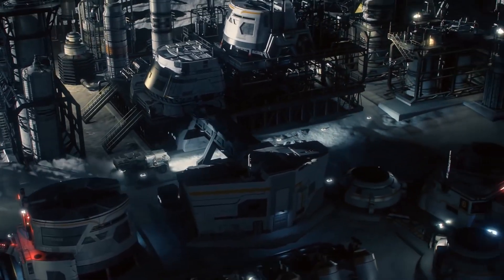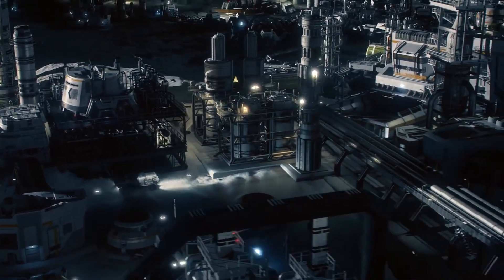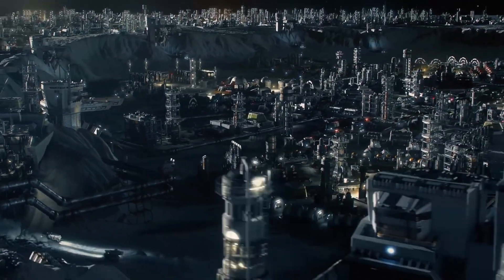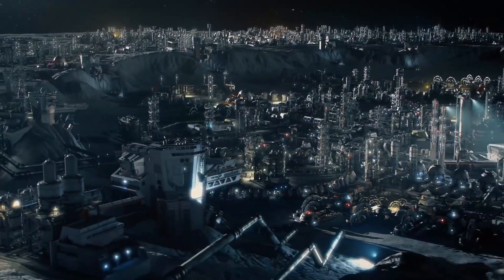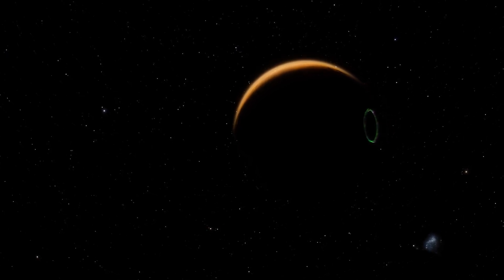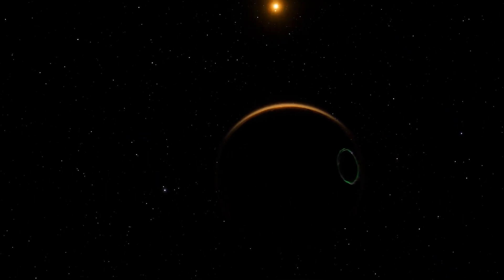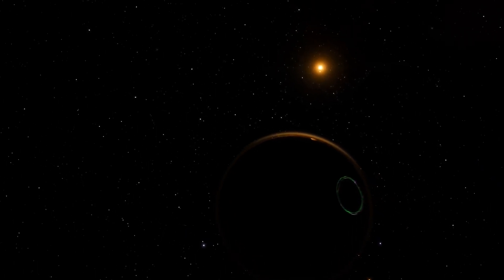By focusing on Proxima Centauri b, the closest exoplanet to Earth, the telescope revealed the presence of unusual bright lights emanating from its surface. What could be the cause of these unusual lights on Proxima Centauri b? Could they indicate the existence of life beyond our own planet?